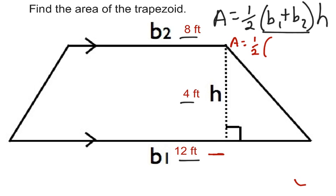Base one is 12. Base two is 8. And then we have a height, which is the perpendicular distance between the base and the top of 4.